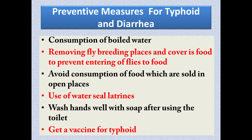Typhoid and diarrhea can be prevented by following these preventive measures: consuming boiled water, especially during an epidemic; removing fly breeding places and covering food to prevent flies from contaminating it; avoiding consumption of food sold in open places; using sealed, clean water sources; washing hands well with soap or sanitizer; cleaning toilets regularly; and getting vaccinated for typhoid, since typhoid can be effectively prevented through vaccination.